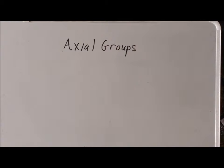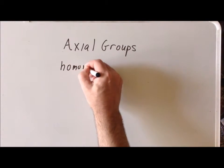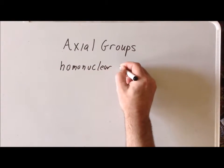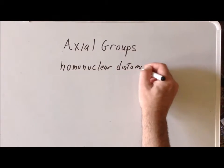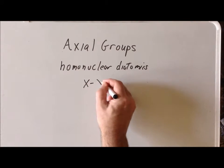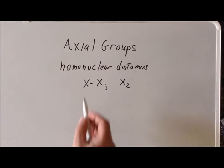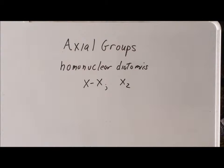The first large class of such molecules are the homonuclear diatomics. These are molecules of the form X bonded to X, so we generally write this as X2. It does not matter whether the bonding between the two atoms is a single bond, double bond, triple bond, or quadruple bond. Whenever we have two atoms in a molecule, the molecule must be linear. And if both of the atoms are identical, it is going to be homonuclear.